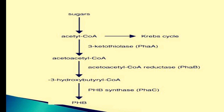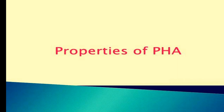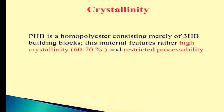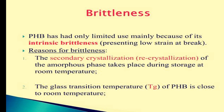3-hydroxybutyryl-CoA, with the help of acetyl-CoA reductase, i.e. PHB, is then converted into PHB. PHB synthase is involved in the properties of PHA. PHB is a homopolyester consisting merely of 3-HB building blocks. This material features rather high crystallinity of 60–70% and restricted flexibility. PHB is also a type of PHA, and has had only limited use mainly because of its intrinsic brittleness, presenting low strain at break.